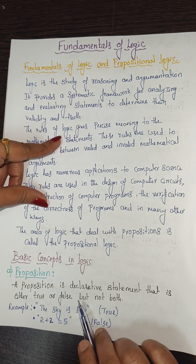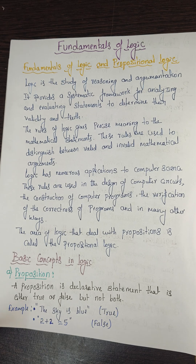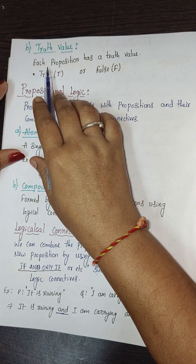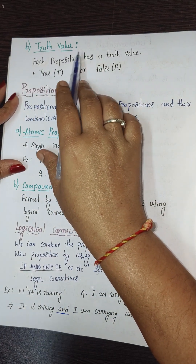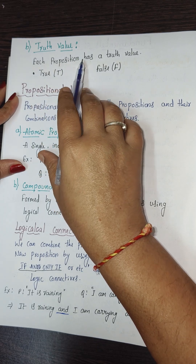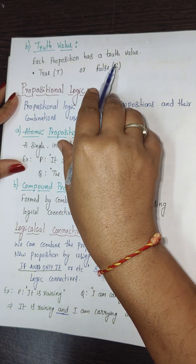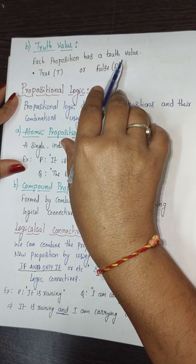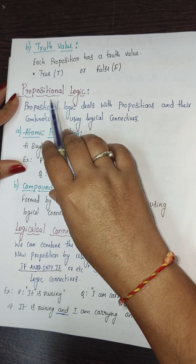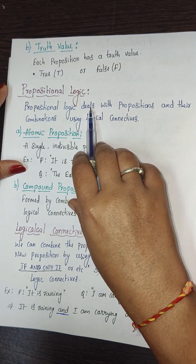The next concept is truth value. Each proposition has a truth value — it may be either true or false. In propositional logic, we deal with propositions and their combinations using logical connectives.